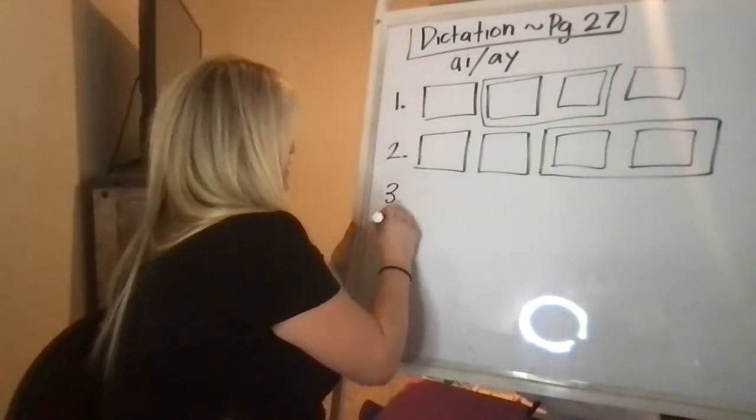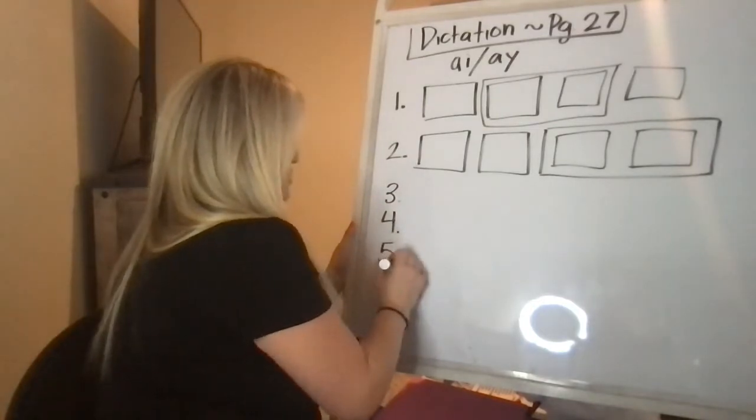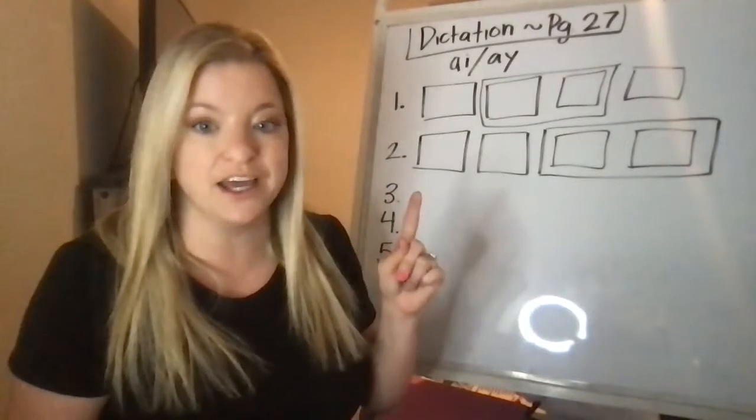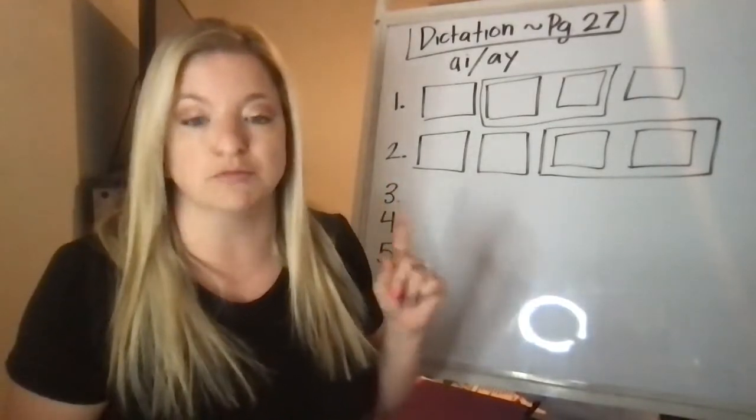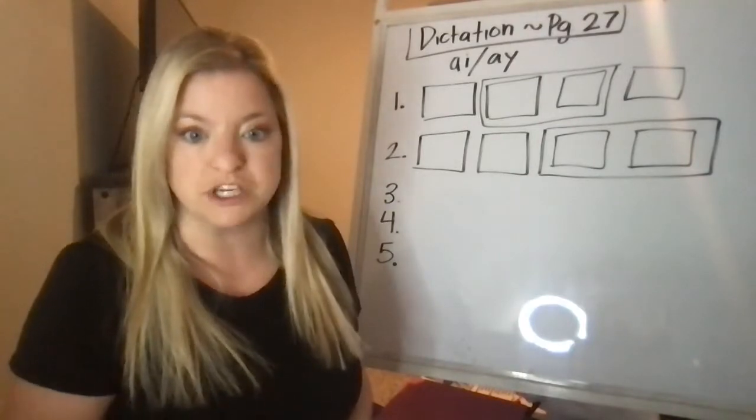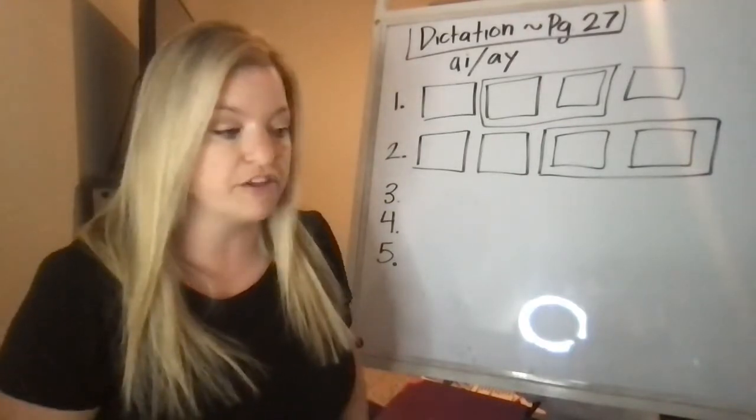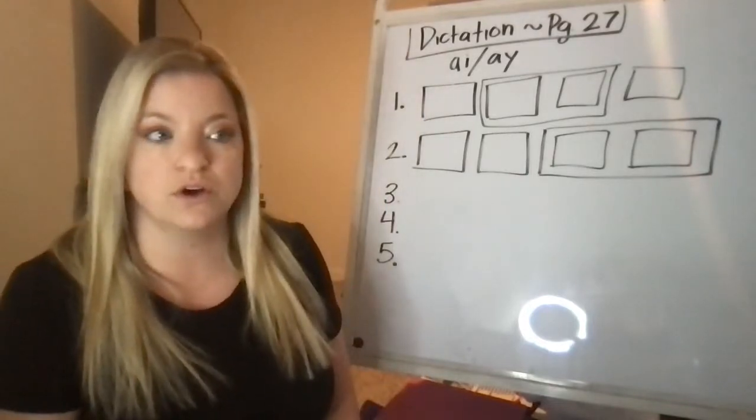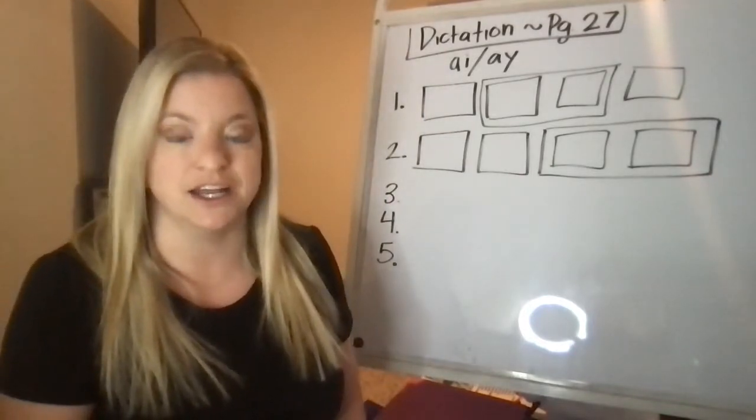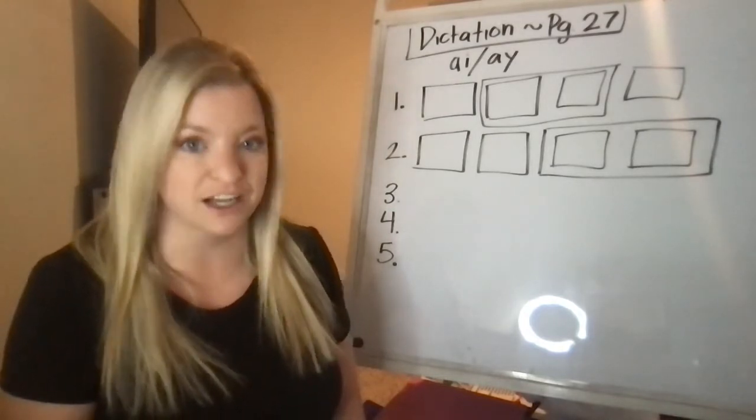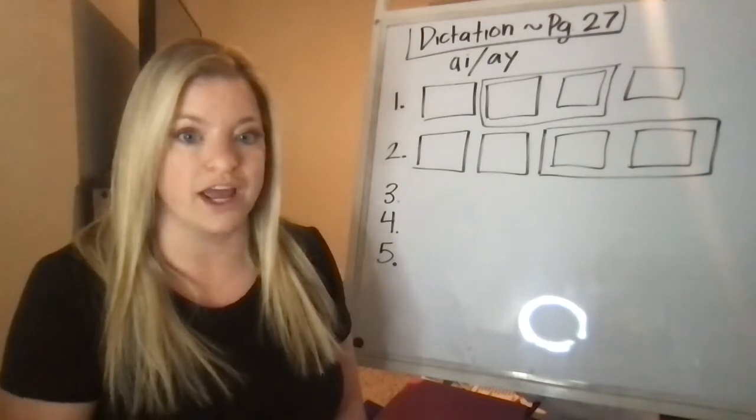Three and four and then we have our sentence five. So remember we're working on A-I or A-Y. Again, both say A. So I'm going to give you the first word. Hopefully you see in your book is a picture of the rain. So it sounds like this: R-A-N. Rain. R-A-N. Rain.